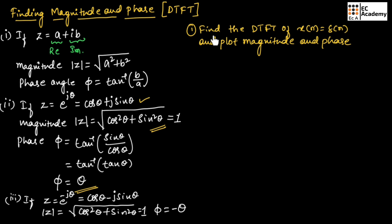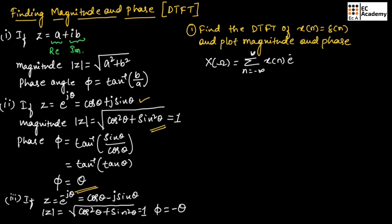Now let us take an example where we need to find the DTFT of x(n) = δ(n) and also plot the magnitude and phase. The standard formula for DTFT is: X(ω) = Σ (n = −∞ to ∞) x(n) e^(−jωn).